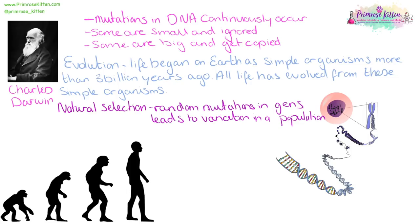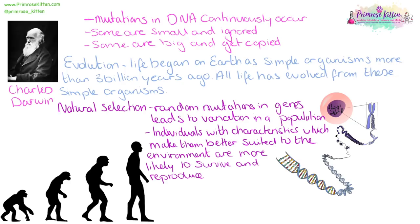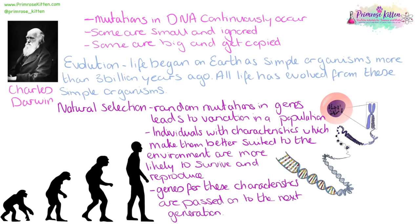Random mutations in genes need some natural variation in a population. That can be small things like different hair color, different eye color, or big things like how tall people are. For giraffes, being tall is quite important because it means they have access to a larger range of food sources. Individuals with characteristics which make them better suited to the environment are more likely to survive and reproduce — whether this is tall giraffes, finches with different beaks, or moths that have gone black or white. And the genes for these useful, desirable characteristics will be passed on to the next generation.